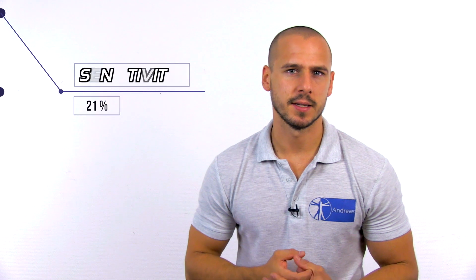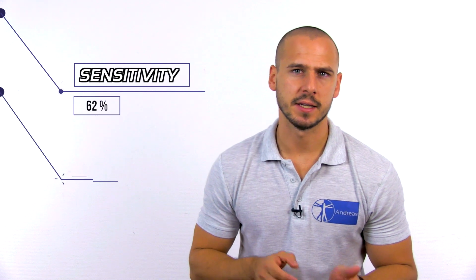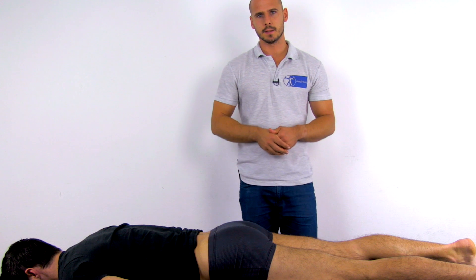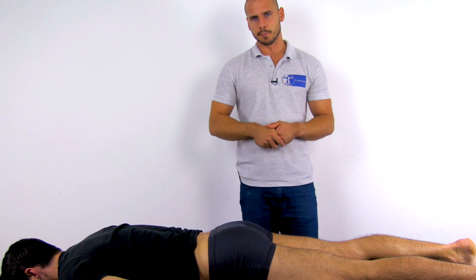As reported by Laslett et al. in 2005, the sacral thrust test has a sensitivity of 63% and a specificity of 75%, which gives it a weak clinical value. It is advised to do this test in a cluster, which you can watch by clicking in the top right corner. To conduct the test, the patient will lie in prone position.